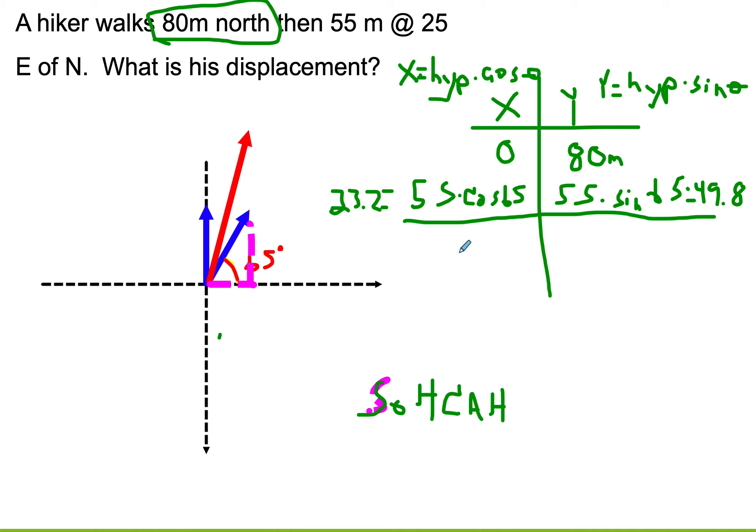So then I would just add these up. So the x part is 0 plus 23.2. That would be 23.2. The y part would be 80 plus 49.8. So that would be 129.8.